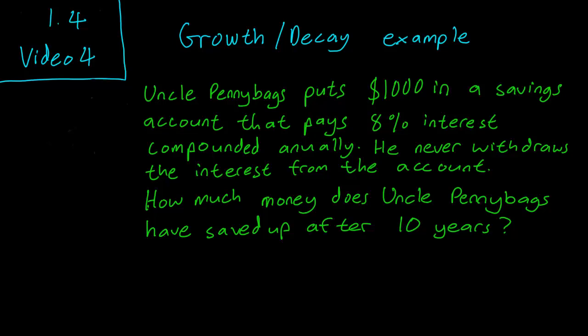So let's see what we have here. Uncle Pennybags, the monopoly mascot, puts $1,000 in a savings account that pays 8% interest compounded annually. He never withdraws any money from his account. The question is, how much money does Uncle Pennybags have saved up after 10 years?